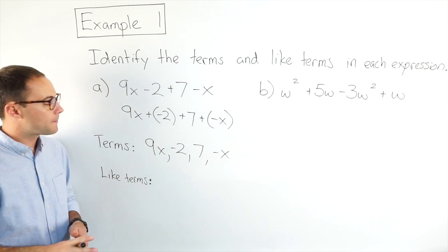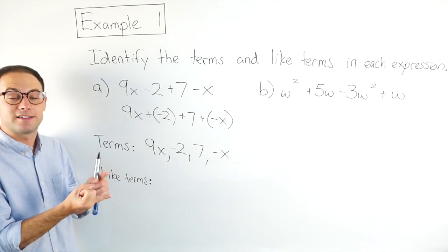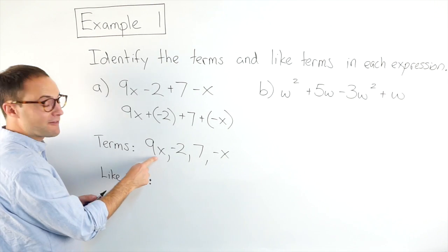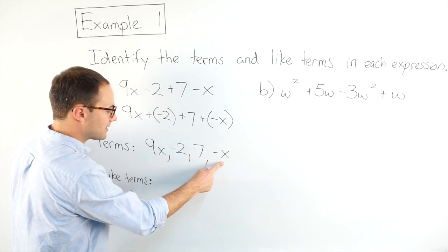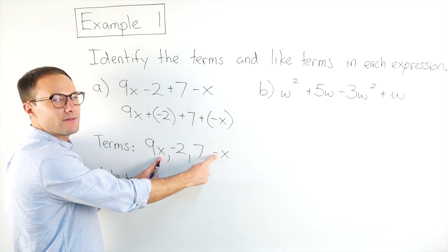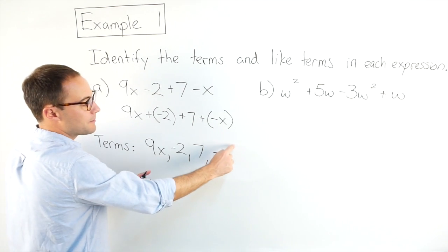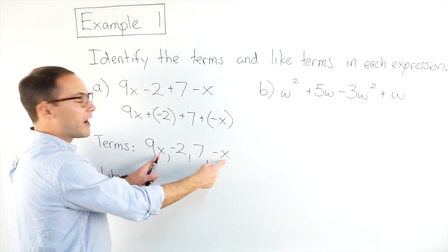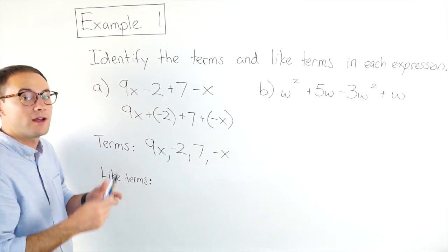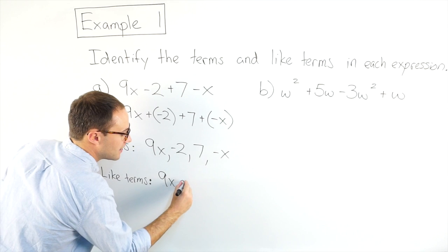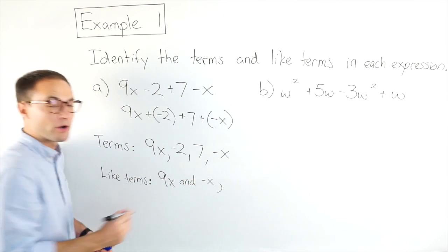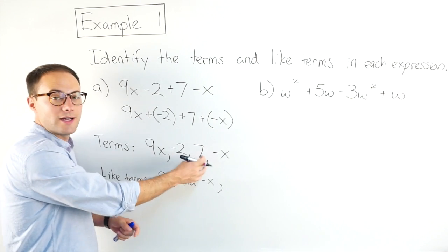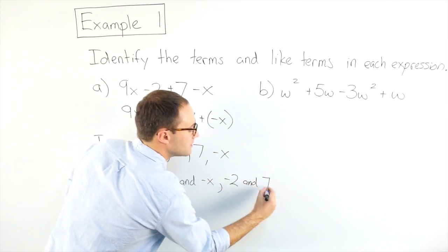My like terms are where I have the same variables raised to the same exponents, or constants. I have 9x and a negative x — they're both x. It doesn't matter that one is negative. The fact is that both are raised to the first power, so those are like terms: 9x and negative x. My other group of like terms are my constants: negative 2 and 7.